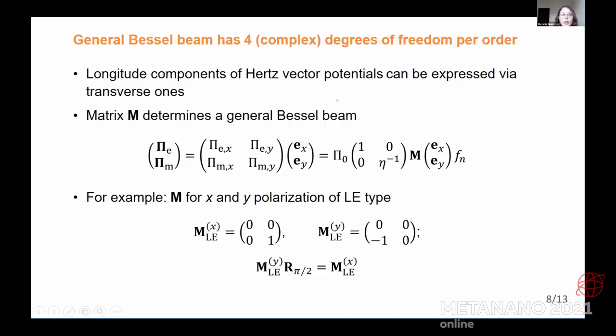And in this step, we propose our new theoretical approach for the generalization of Bessel beams. And we decided to consider general Bessel beams as a linear combination of all possible solutions of Hertz vector potentials. Here we found out that actually longitudinal components of Hertz vector potentials can be expressed via its transverse components of different orders. Here we can describe a general Bessel beam using this 2x2 matrix, just with four components or complex parameters. Here is the definition of our matrix M.